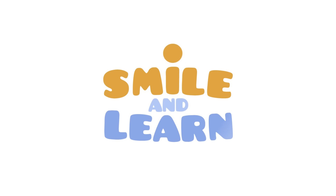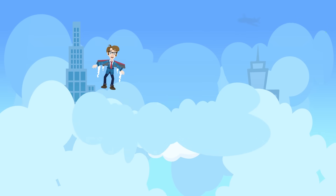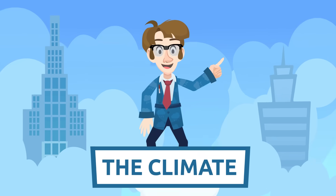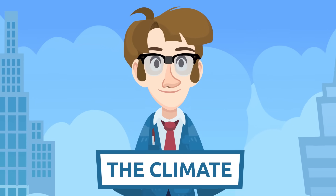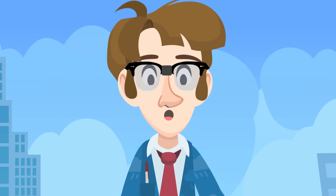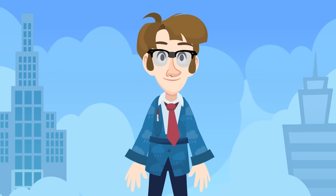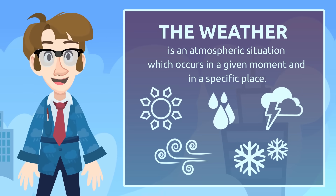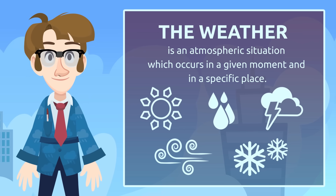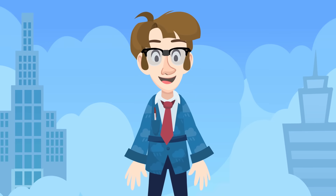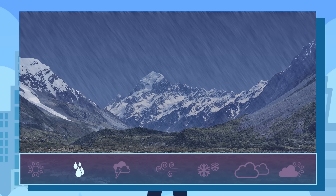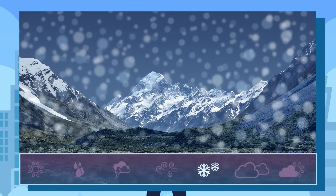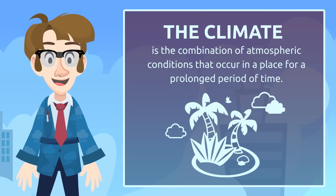Hello friends! Today we're going to learn what climate is. Climate and weather are closely related to one another, but they are different concepts. Do you know the difference? The weather is an atmospheric situation which occurs in a given moment and in a specific place. Look outside the window — what's the weather like now? Is it cold or hot? Is it rainy, cloudy, or windy?